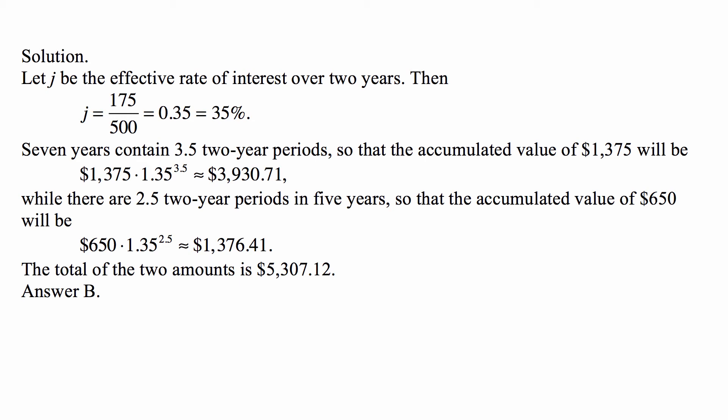There are 2.5 two-year periods in five years, so that the accumulated value of $650 will be $650 times 1.35 to the power of 2.5, or approximately $1,376.41.